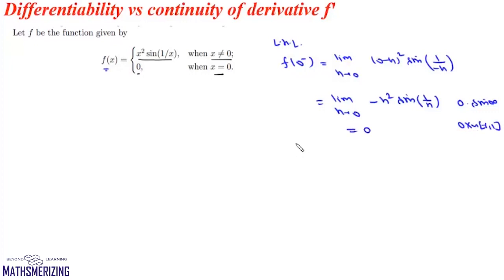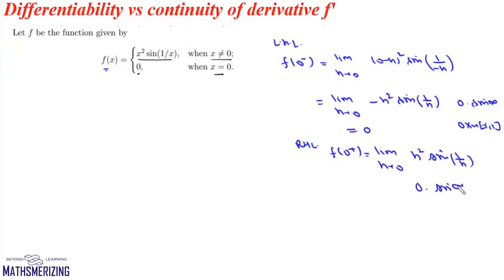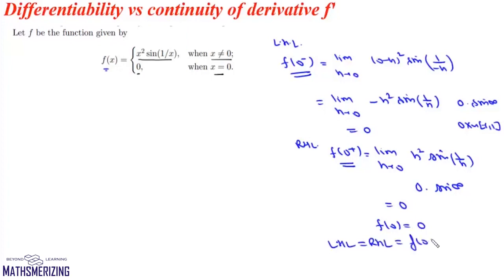Similarly, the right-hand limit f(0⁺) is limit h→0 of h²·sin(1/h). Again the form is 0·sin(∞), which is 0. Since the left-hand limit equals the right-hand limit equals f(0) = 0, this function is continuous at x = 0. Other than x = 0, this function is always continuous and differentiable, so f is continuous on ℝ.